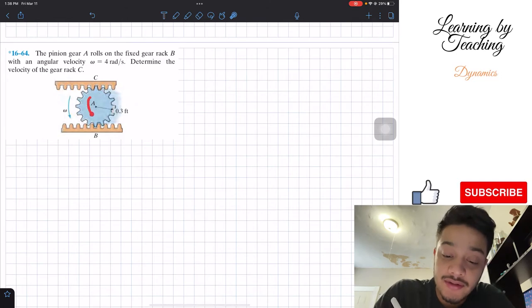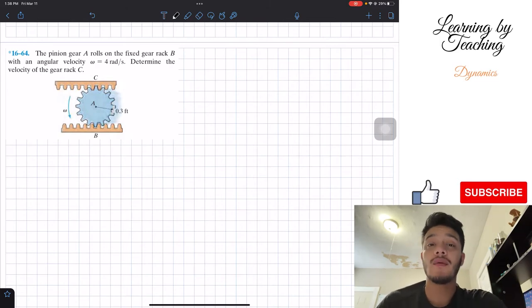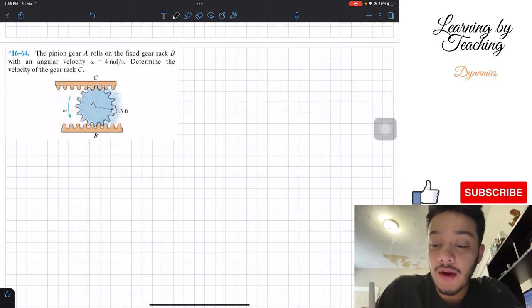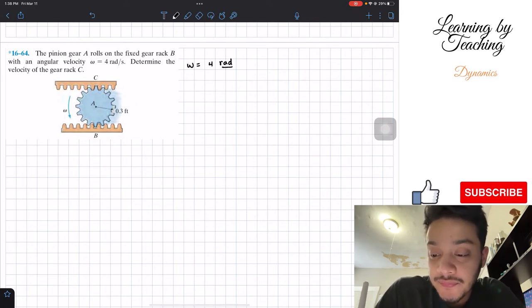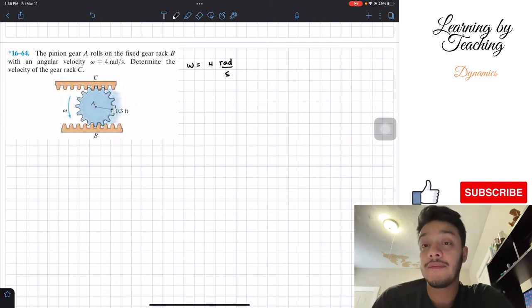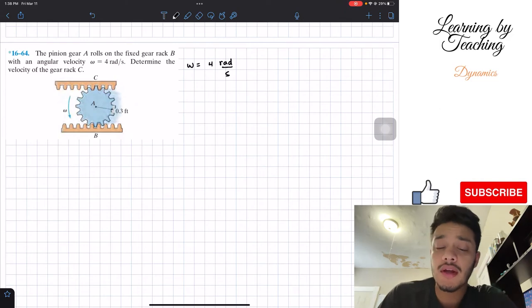We're given that the radius of disk A is equal to 0.3 feet. As always, I like to start my problems by writing out my givens. So I have that omega is equal to 4 radians per second, and that's basically all the givens that I have for this problem in the problem statement.